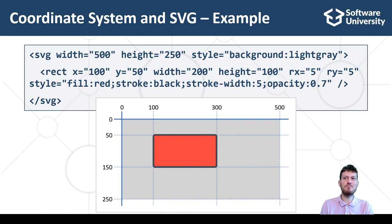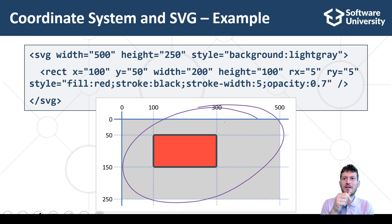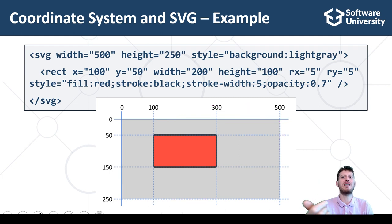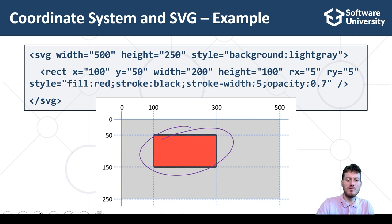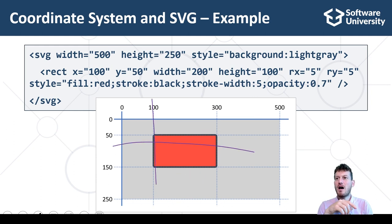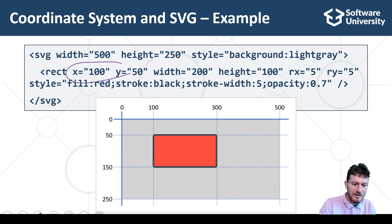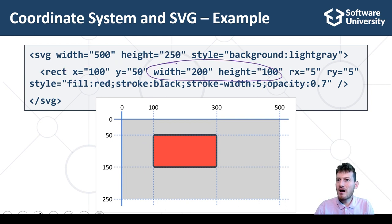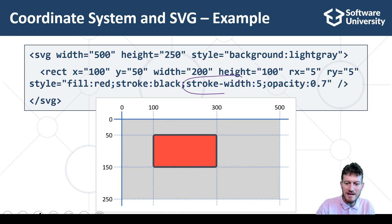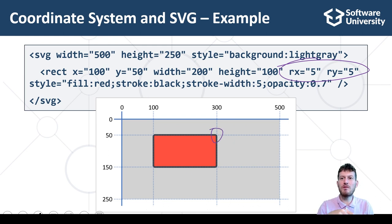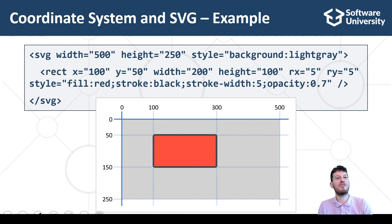This is an example of how basic school level mathematical skills are used to draw objects using SVG, Scalable Vector Graphics — the vector graphics standard for the web. We draw a rectangle at a certain position in the coordinate system with a certain size, border width and border radius. Developers use similar concepts when they create user interfaces using HTML and CSS or XAML or other graphical representation technology.